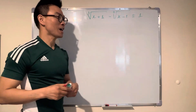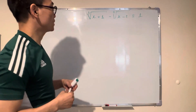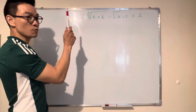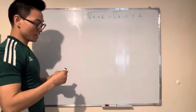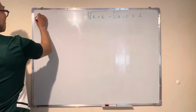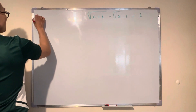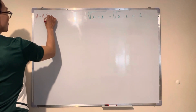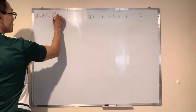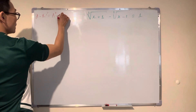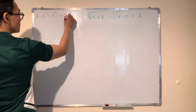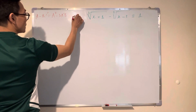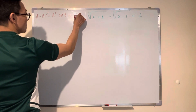Hi guys, today I will show you how to sort out this equation. You can use the formula: (a - b)³ equals a³ minus 3a²b plus 3ab² minus b³.